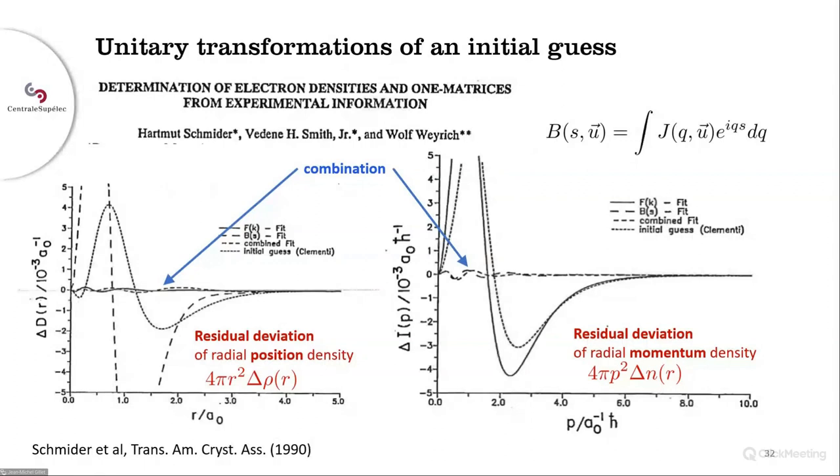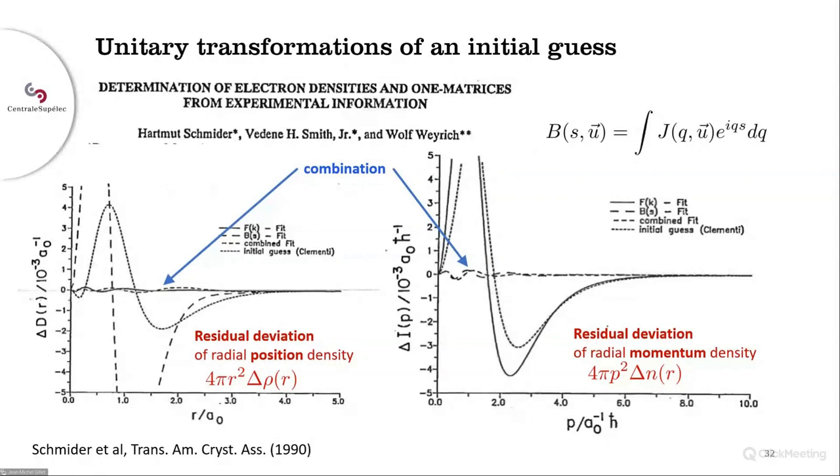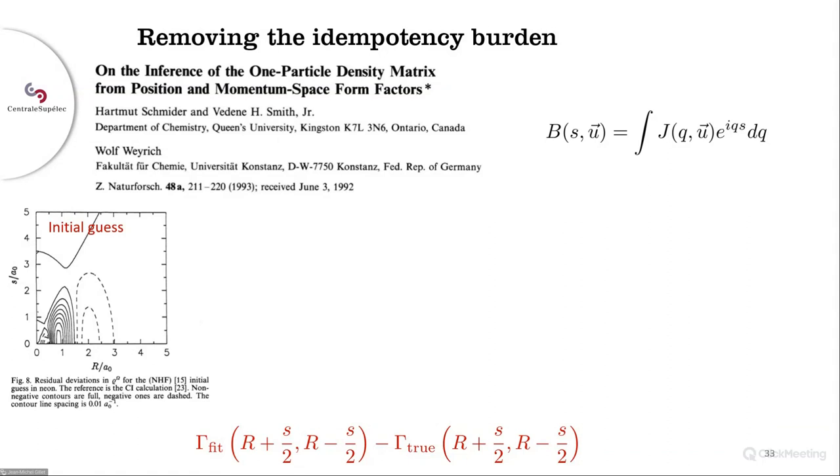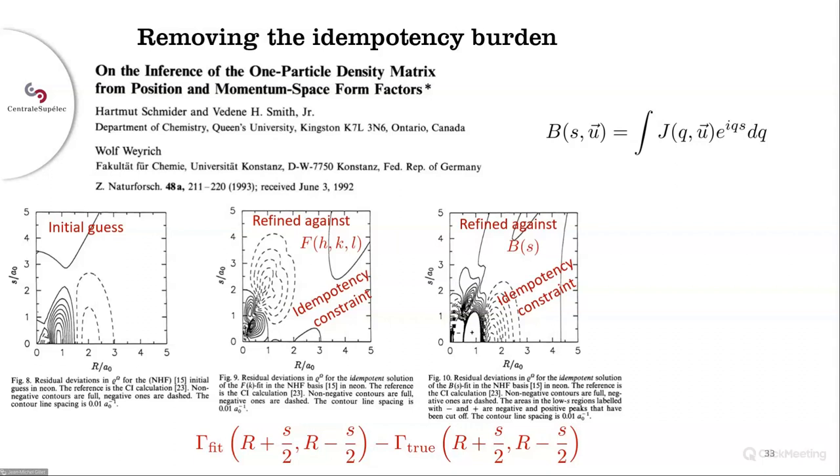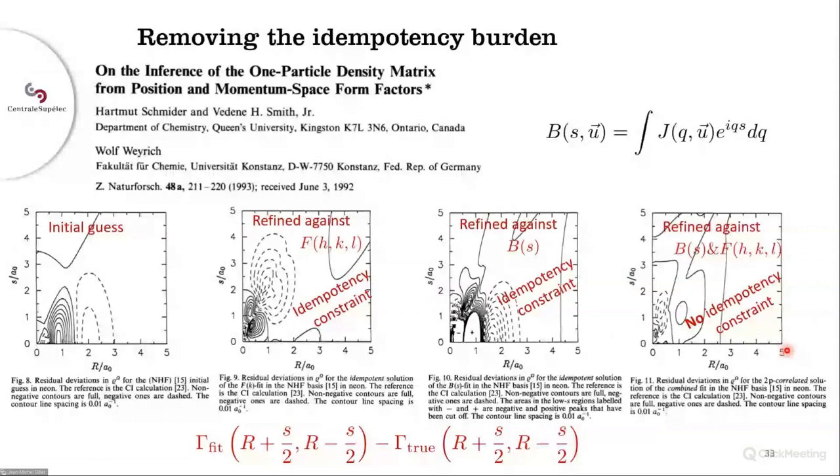Even more convincing results were published in the following years. Take this example from the 1993 paper, where the authors give a representation of the density matrix for an isolated neon atom after refinement against Bragg and Compton data. And one can clearly see all the benefits of including both position and momentum space data in this last figure. I must indicate that for this joint model here, there is a new element. While preserving the n-representability, the one matrix is no longer forced to be idempotent. It can be seen on the other example they give with a different basis set, though. Unfortunately, these promising results were not pursued, even if Weyrich mentions it in one of his last papers, but I haven't been able to trace it.